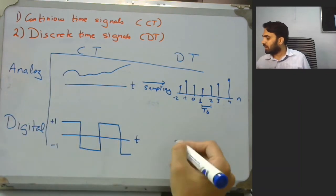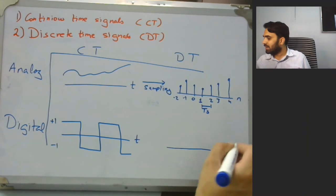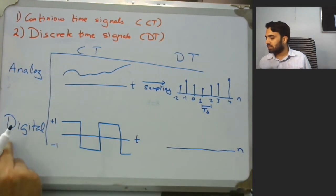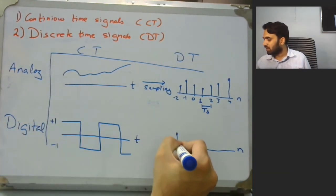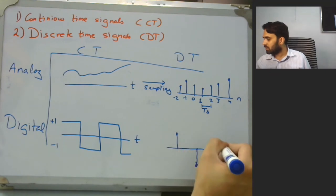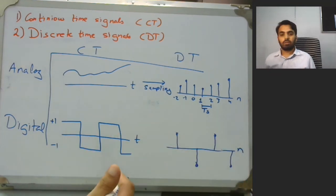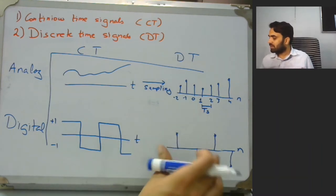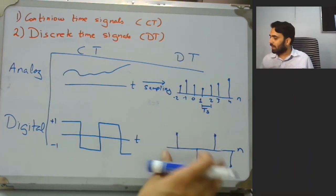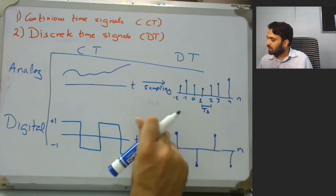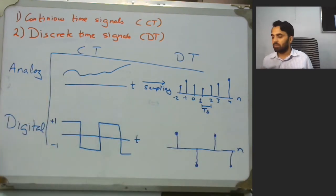Finally we can have discrete time digital signal and that could be something like this. We have discrete values in time and each value is taking a specific amplitude, so this would make it digital.